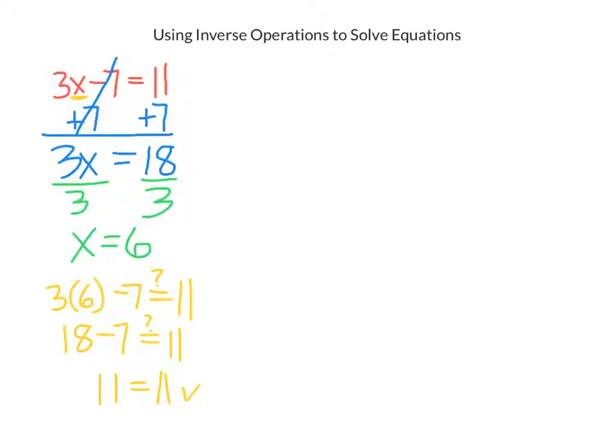Now let's try another one. How about g over 2 plus 5 equals 9. We look at the operations. There is division and there is addition. So again, we start by undoing the addition or subtraction. So we undo the plus 5 by subtracting 5 from both sides of the equation.